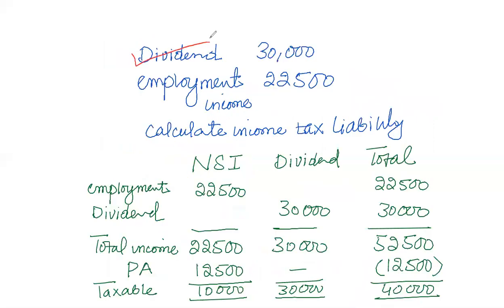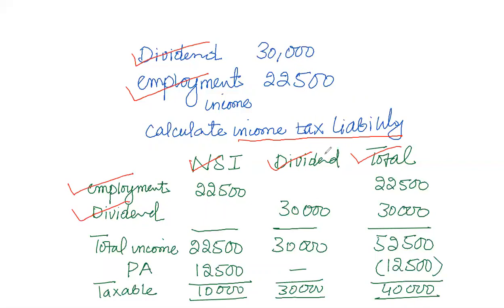Let's add another income source. For example: dividend income is £30,000 and employment income is £22,500. Employment income is a type of non-saving income. As there are two types of income, we'll use a proforma with columns for non-saving income, dividend income, and total. Employment income goes in the non-saving column, dividend in the dividend column. Total income before personal allowance is £52,500. After deducting personal allowance, taxable non-saving income is £10,000 and taxable dividend income is £30,000, giving total taxable income of £40,000.